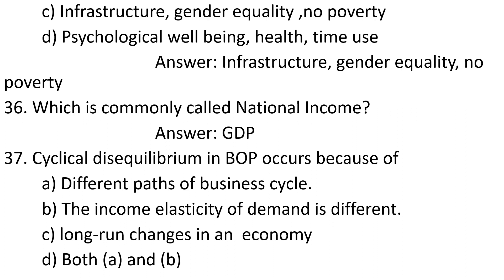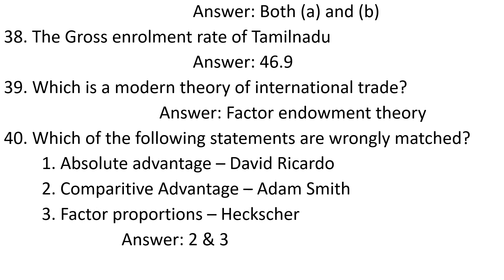Question 36: Which is commonly called national income? Answer: GDP. Question 37: Cyclical disequilibrium in BOP occurs because of: A. Different parts of business cycle. B. The income elasticity of demand is different. C. Long-run changes in an economy. D. Both A and B. Answer: Both A and B.